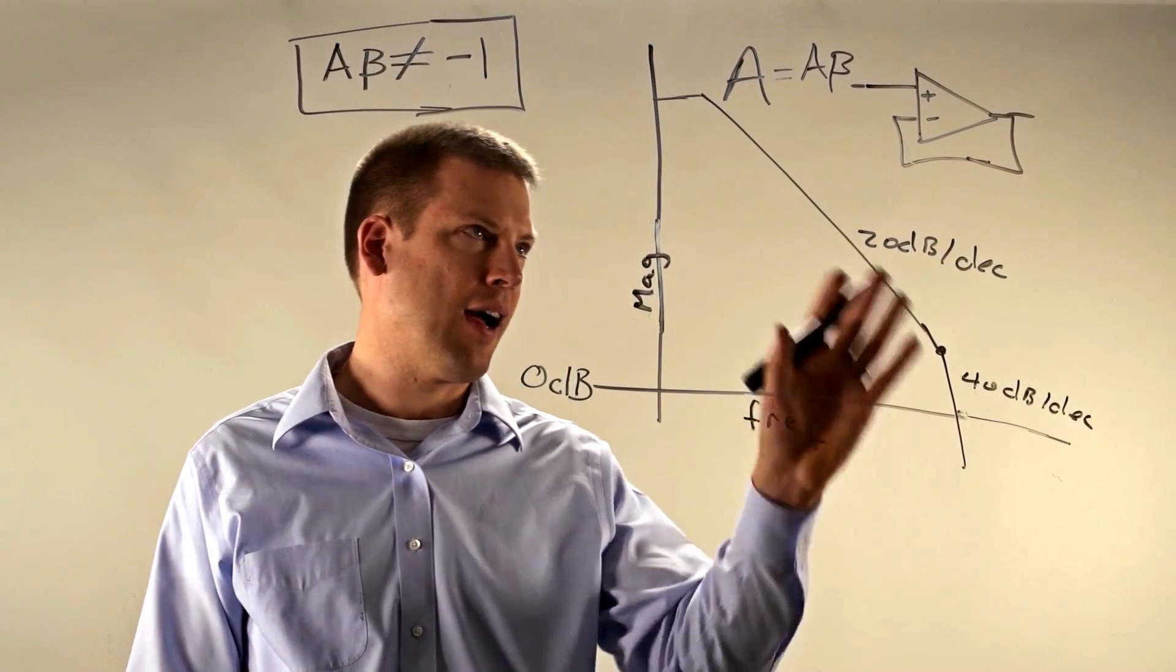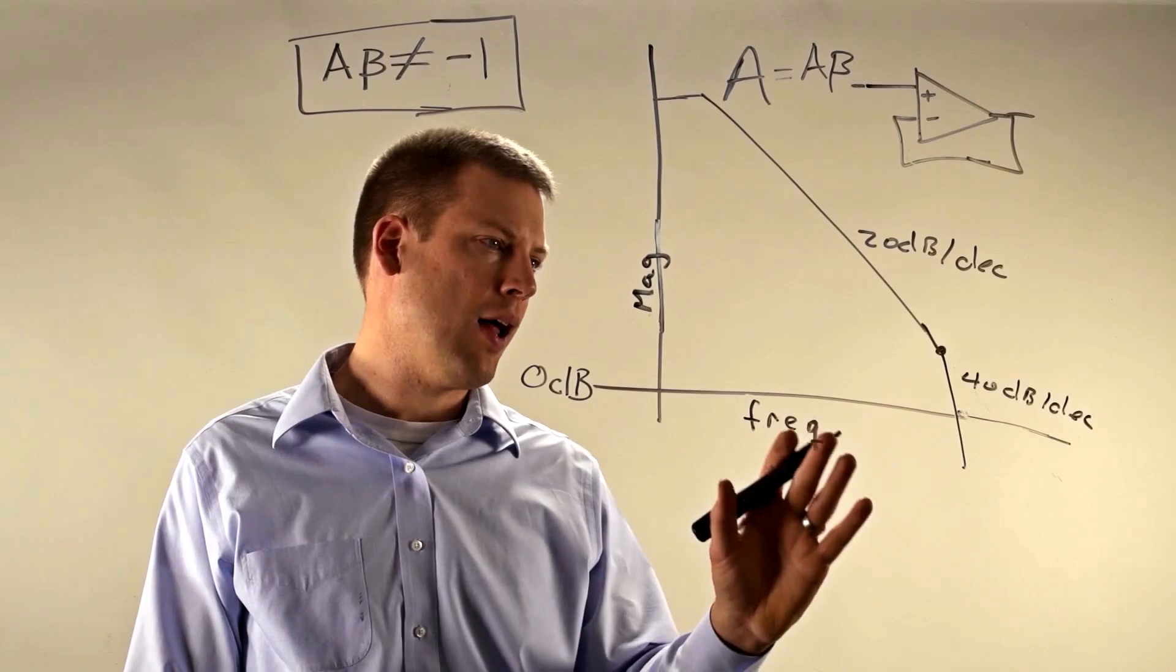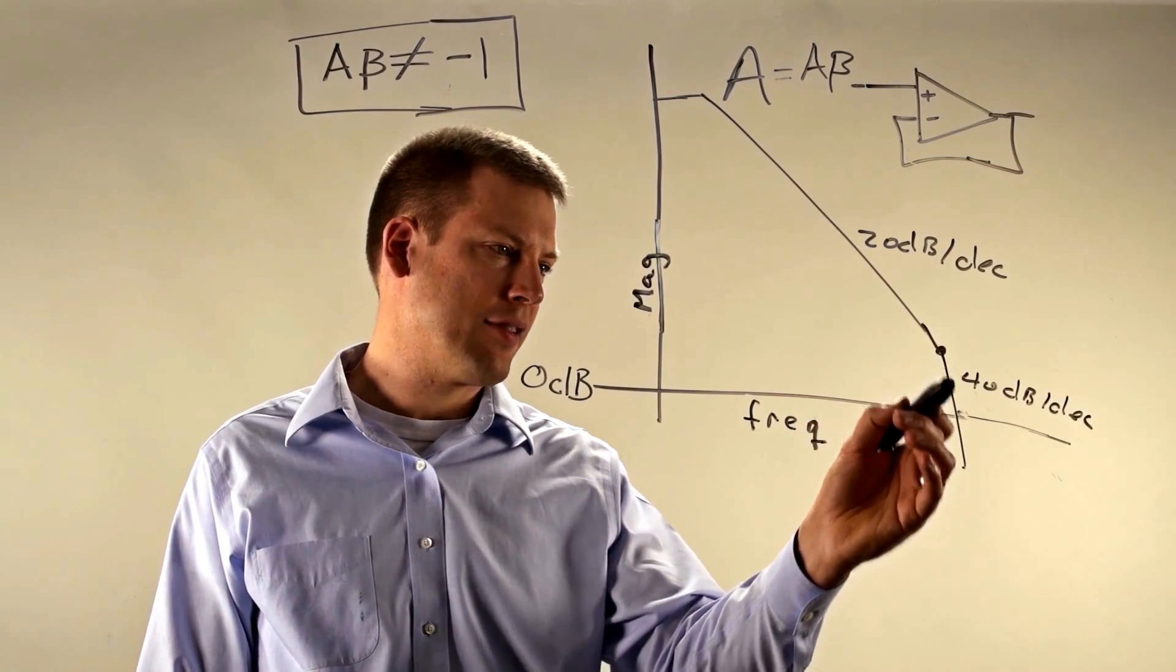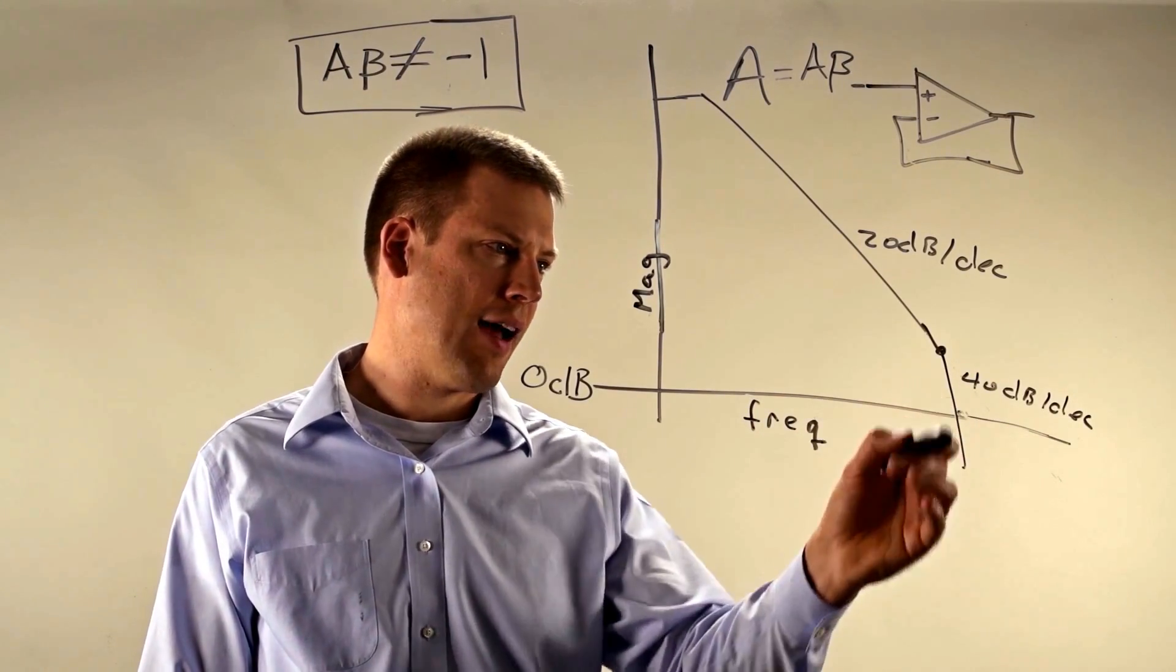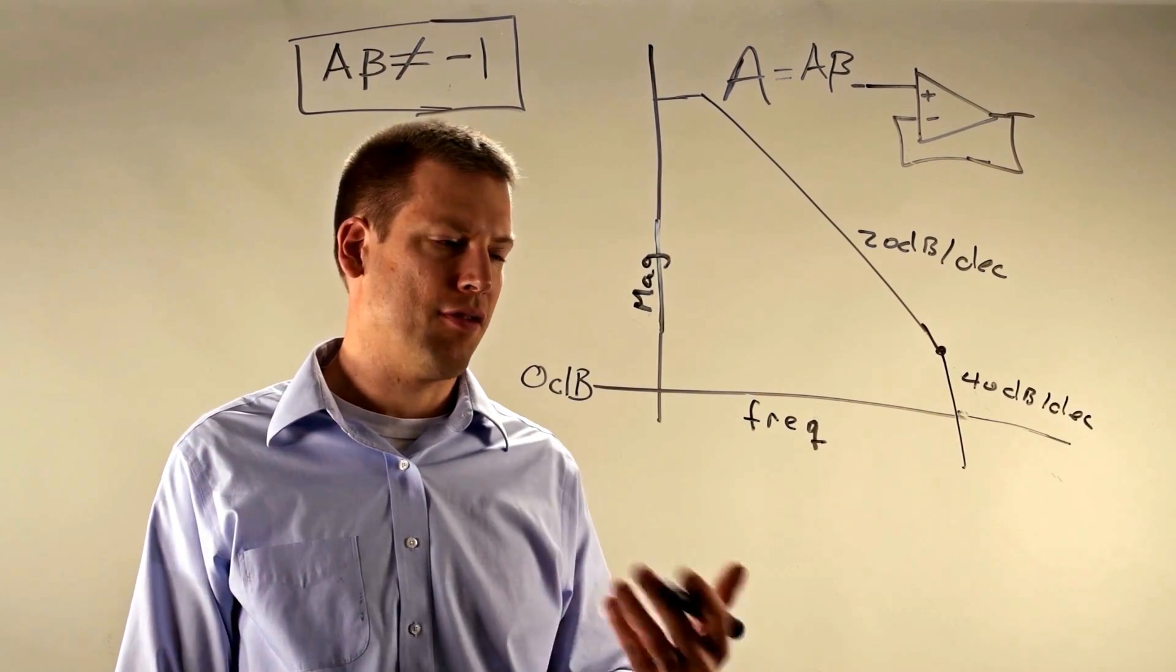And you can see that if I have a beta of 1 so that my closed loop gain is just this plot, then as I cross through my 0 dB axis I have my 40 dB per decade and I have my 180 degree phase shift and therefore I am unstable.